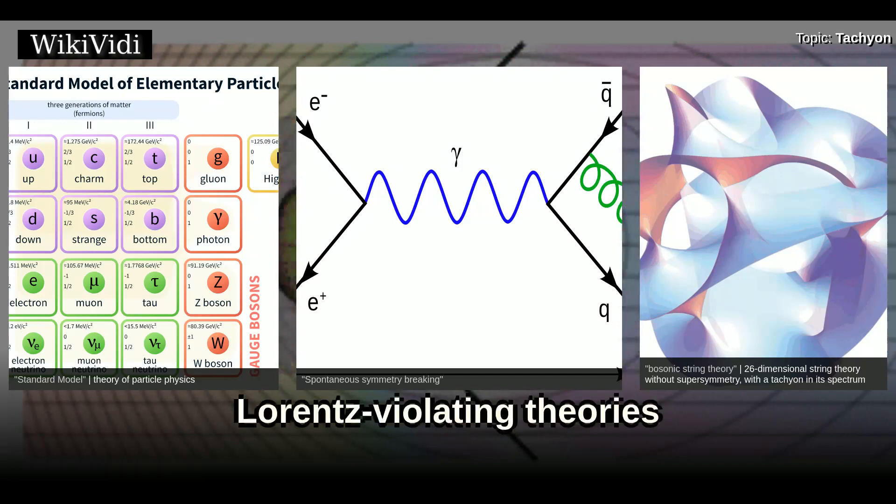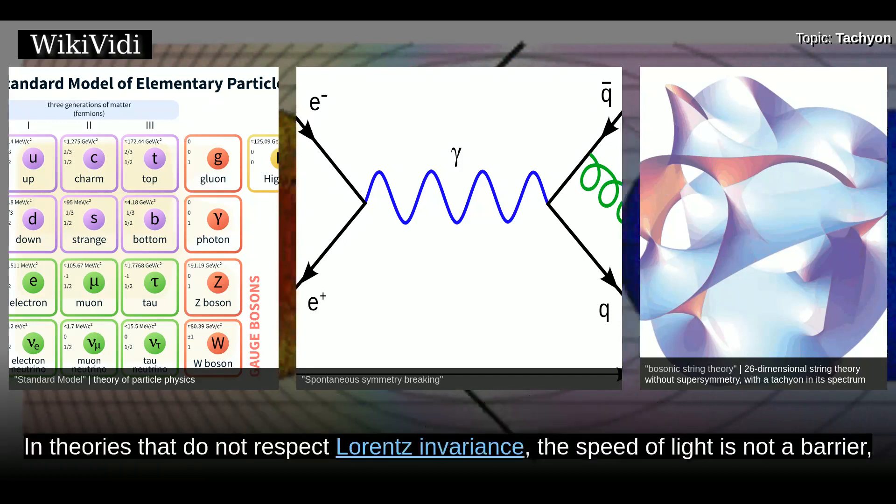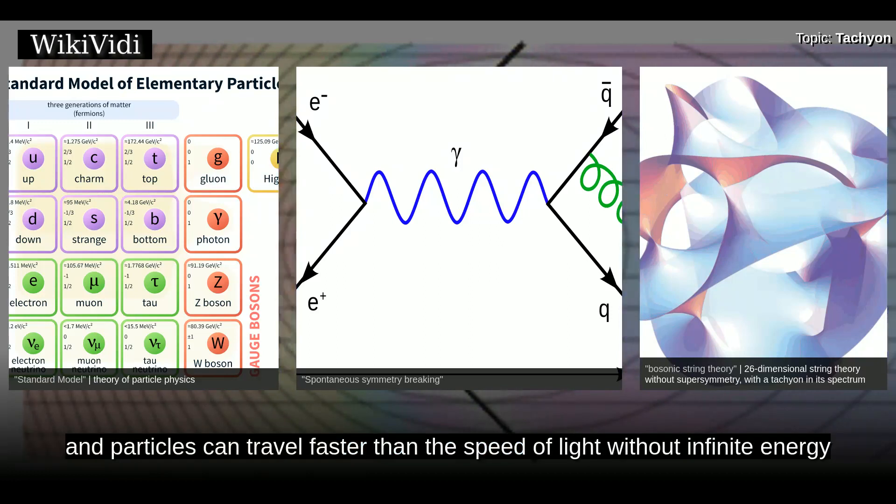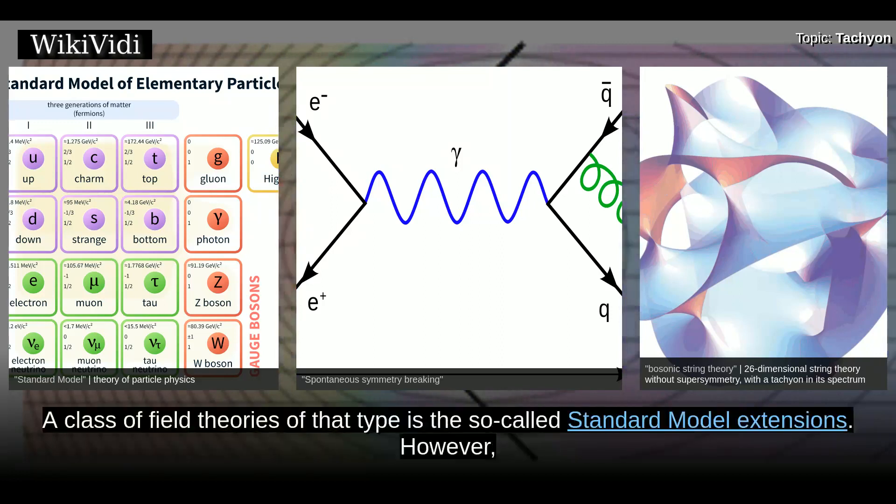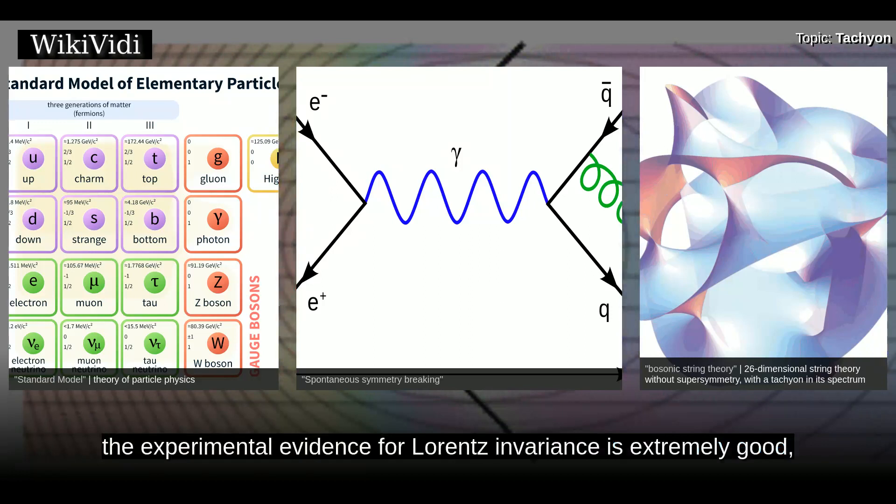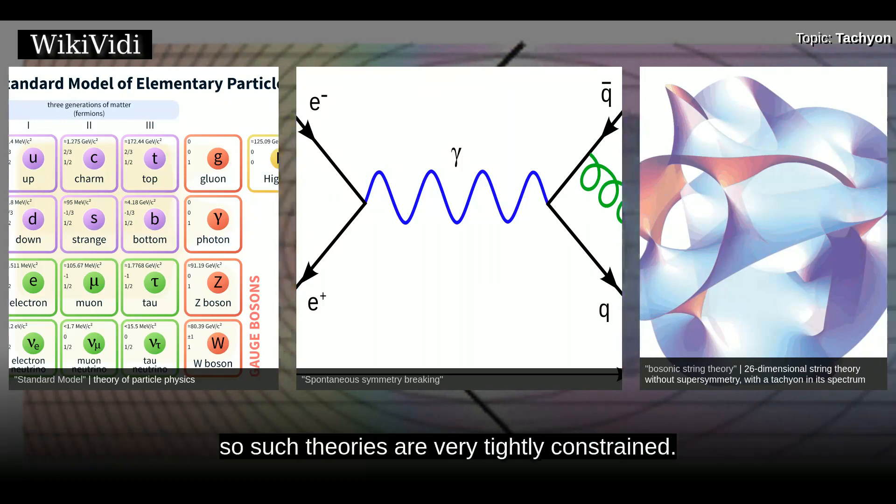Lorentz-violating theories. In theories that do not respect Lorentz invariance, the speed of light is not a barrier, and particles can travel faster than the speed of light without infinite energy or causal paradoxes. A class of field theories of that type is the so-called standard model extensions. However, the experimental evidence for Lorentz invariance is extremely good, so such theories are very tightly constrained.